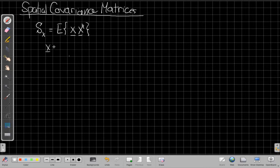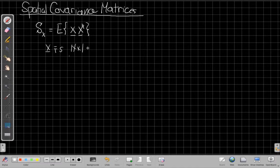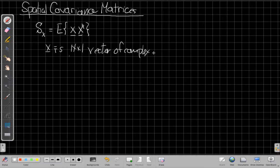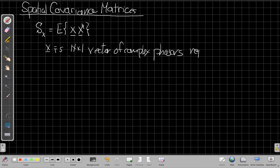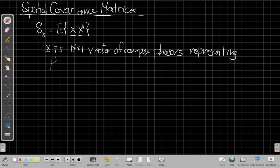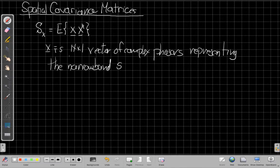Where X is our, or X is an N by 1 vector of complex phasors, representing the narrowband signal observed on an array of N sensors.